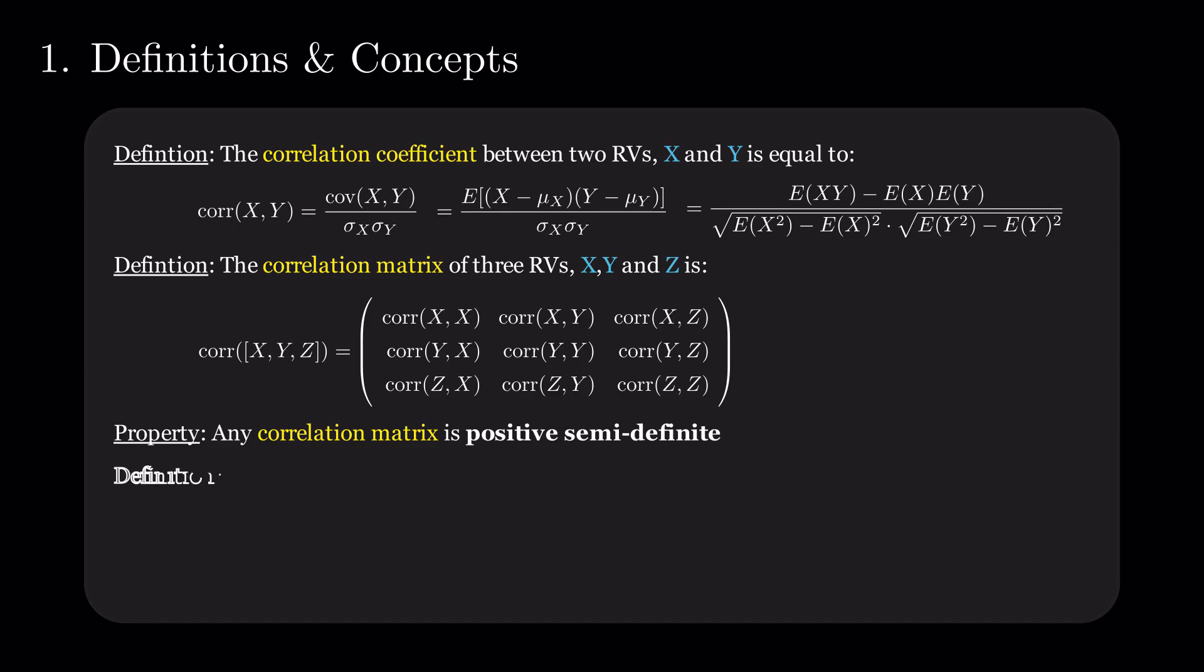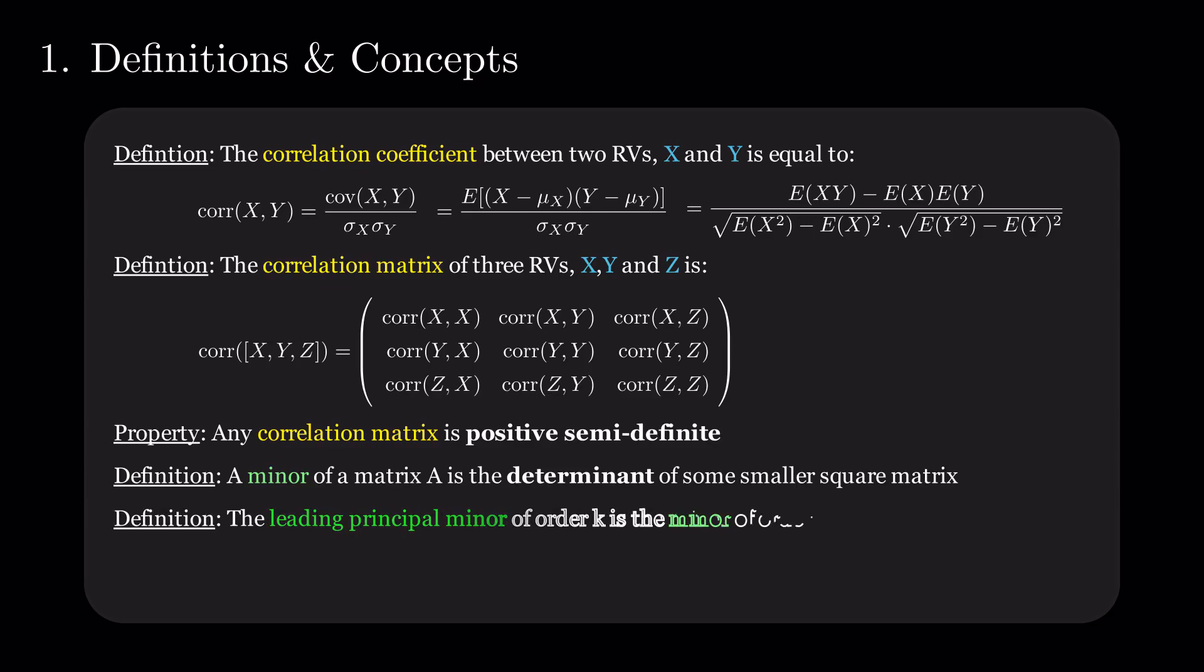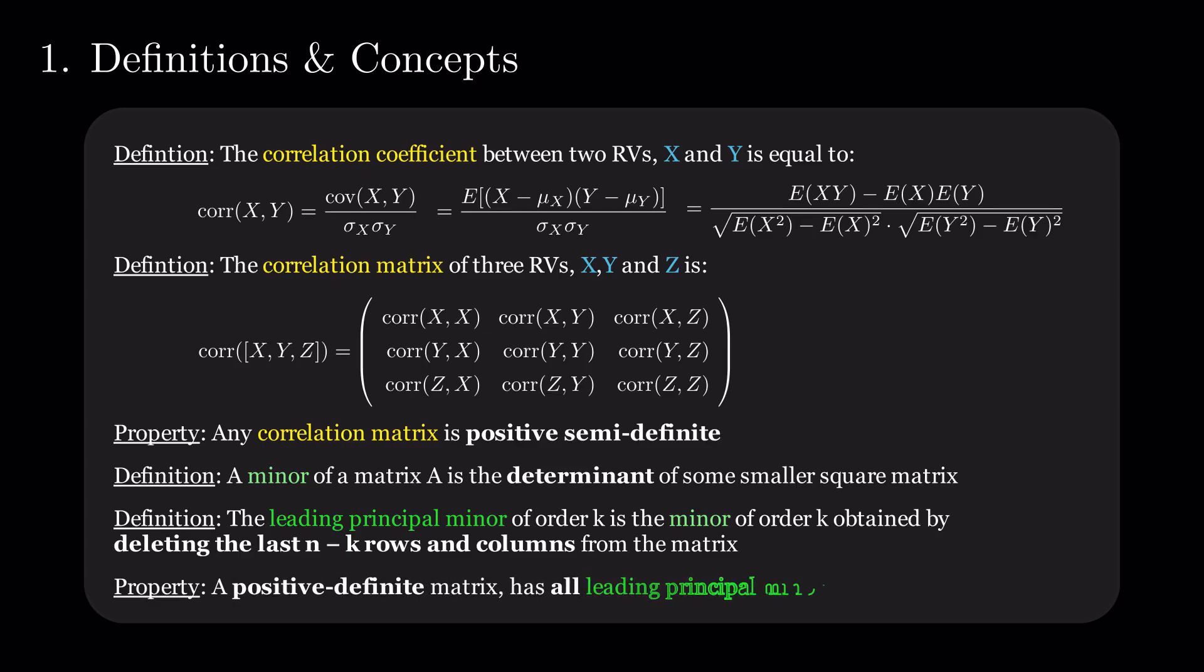Next, we define the terms minor and leading principal minor, which are the determinants of the matrix obtained by deleting the last n-k rows and columns from the original one. In the end, we need one less property of a positive semi-definite matrix. All its leading principal minors are non-negative.